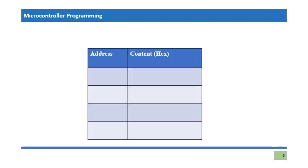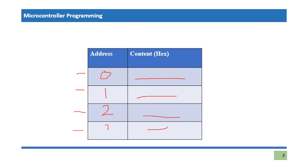Let's say we have a memory with only four locations. This is location one, location two, location three, and location four, with some content written in these slots. We number them from zero to three — slot zero, slot one, slot two, and slot three.